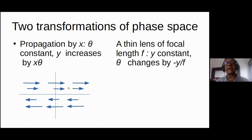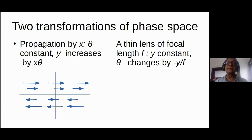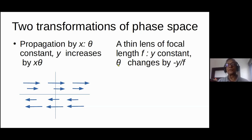The other transformation we look at is a thin lens. A good lens, no matter what the value of y is, is supposed to send it through the focus. You can convince yourself that for this, theta has to change by minus y/f. The higher y is, the more you have to deflect. The minus sign is because it's focusing: if y is positive you want to send it down, if y is negative you want to send it up. This is also a shearing transformation, but now a shear in the other direction, and it also preserves area.